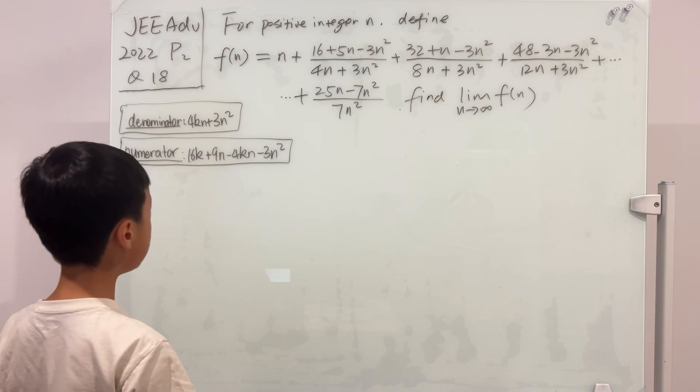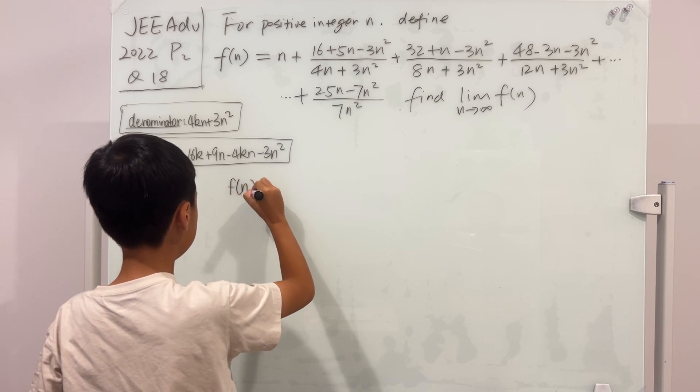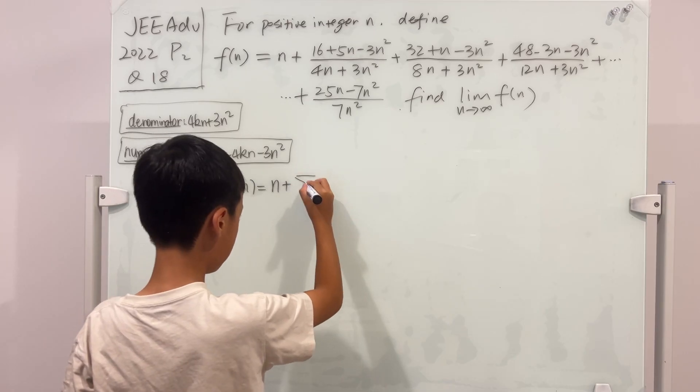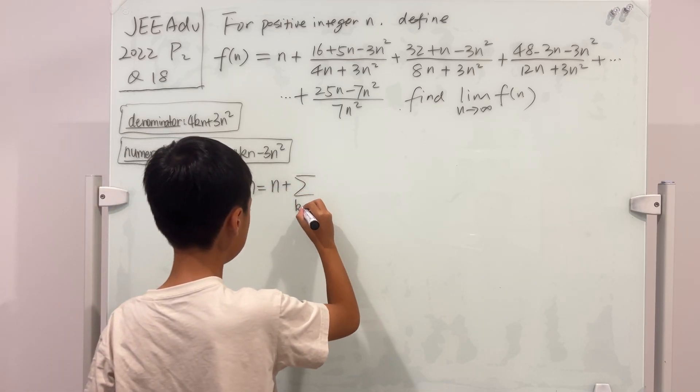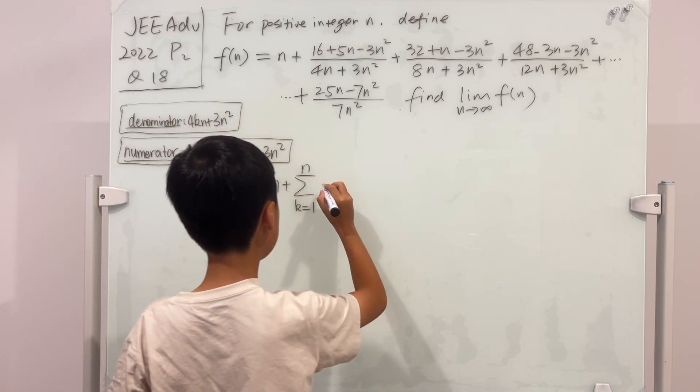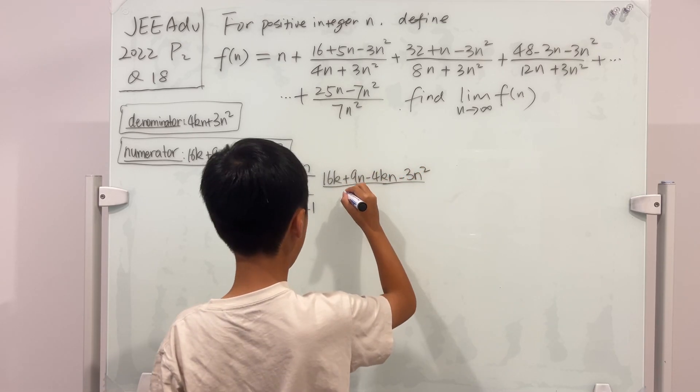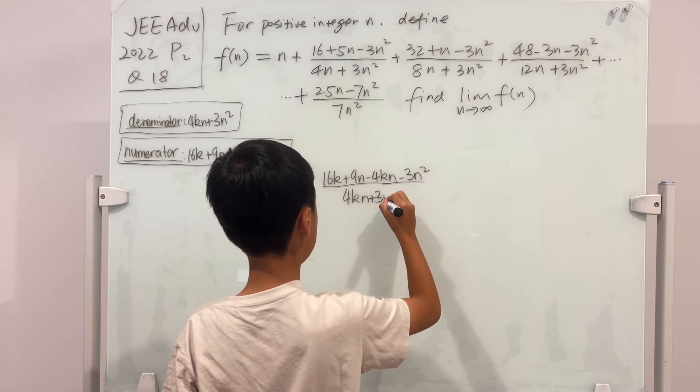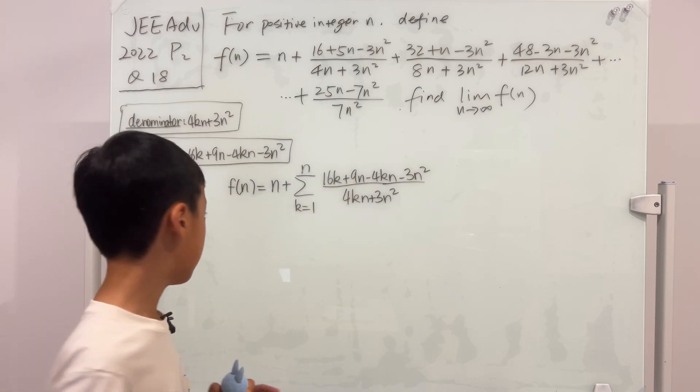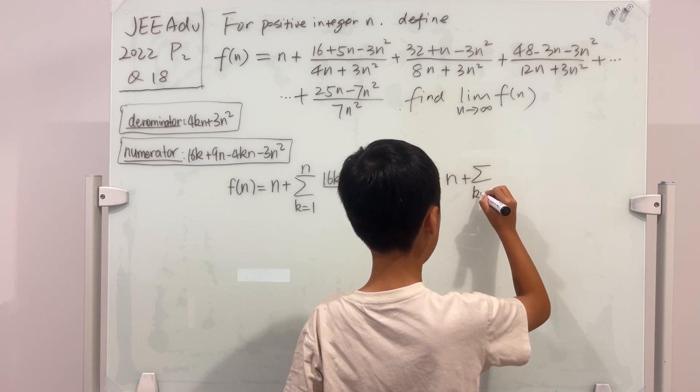So now we can change this into a sum. So if we rewrite f(n), this is equal to n plus the sum, of course when k goes from 1 to n, of the numerator over the denominator, over 4kn + 3n². And I'm going to do some manipulation to this sum. So then it becomes n plus the sum.